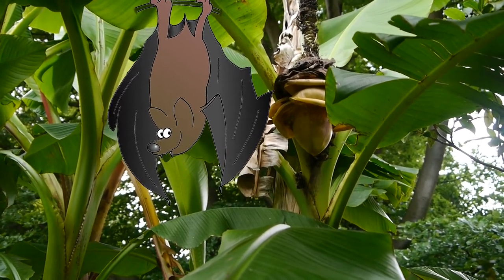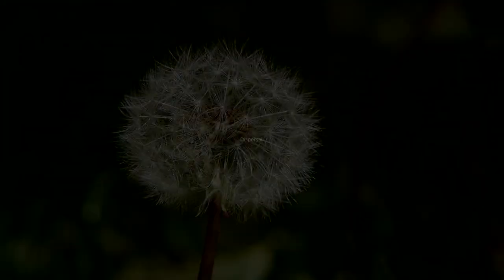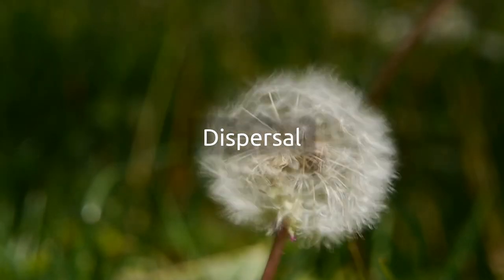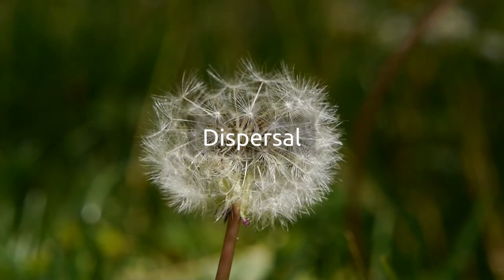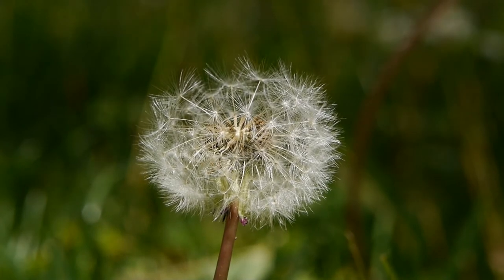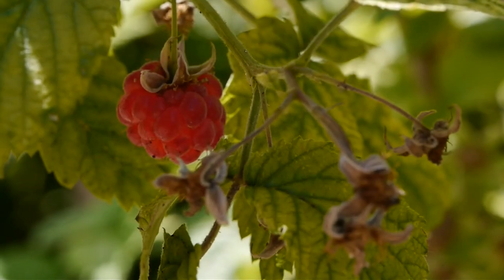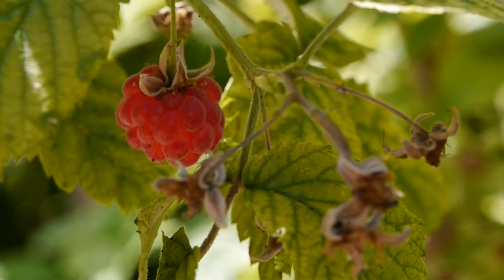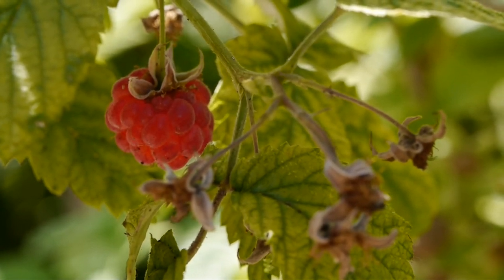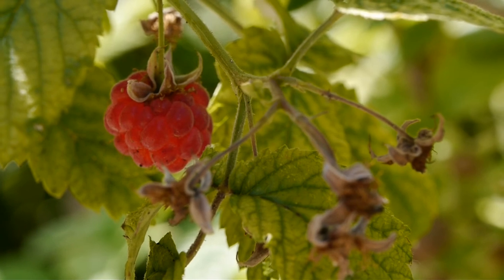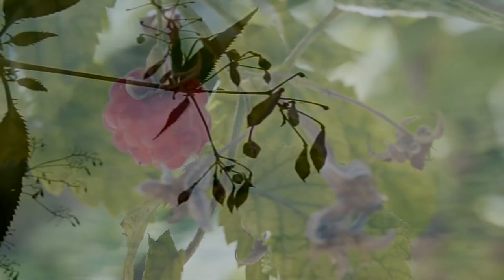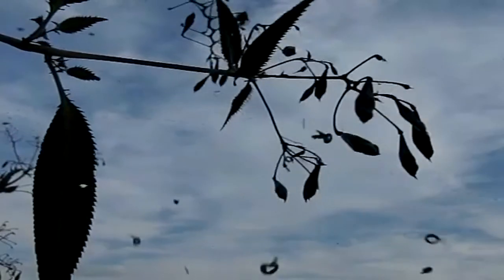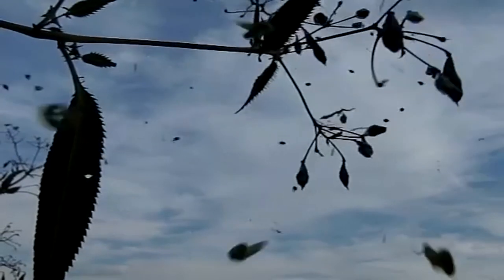For the dispersal of their seeds, plants may use various mechanisms to enable them to travel for many kilometers in the wind, or they use tasty fruits to ensure that animals will distribute them. Other plants catapult their seeds through the air or make them float on water.